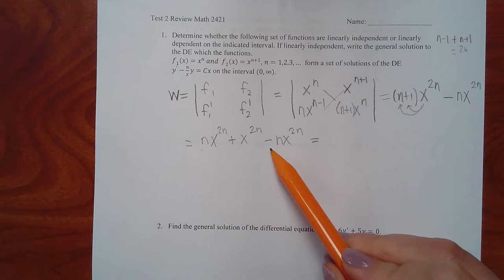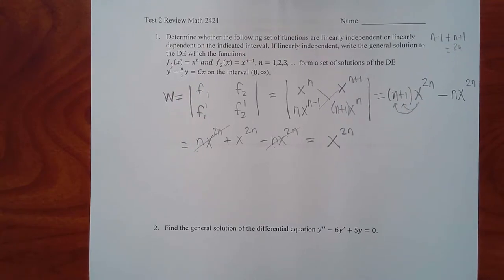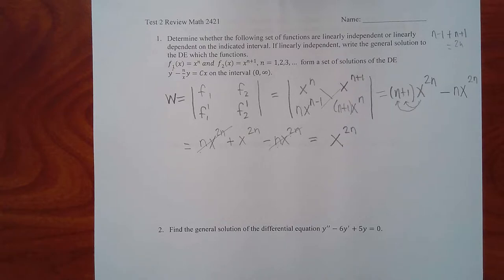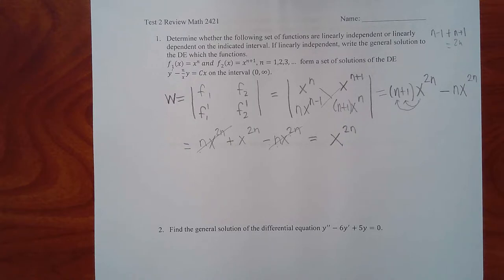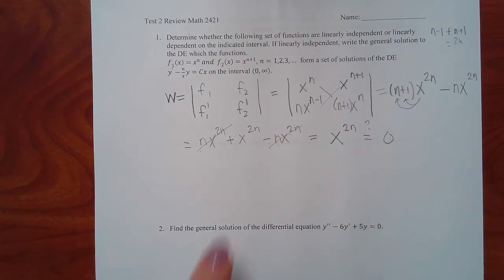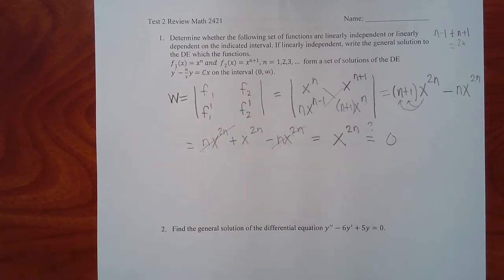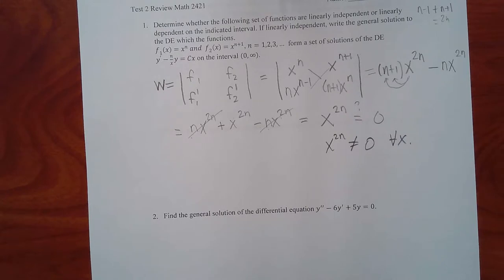We get n·x to the 2n minus n·x to the 2n, so those two wipe each other out. Now look at the interval — they gave us zero to infinity, but zero is not included because it has a parenthesis, not a bracket. So x cannot be zero. As long as x is not zero and positive, this expression will never equal zero, which means it does not equal zero for all x.